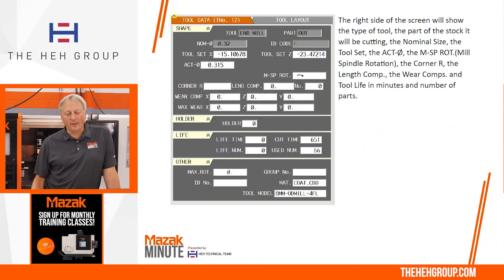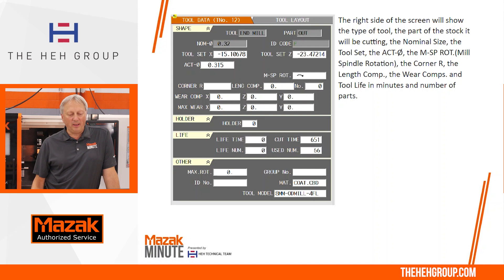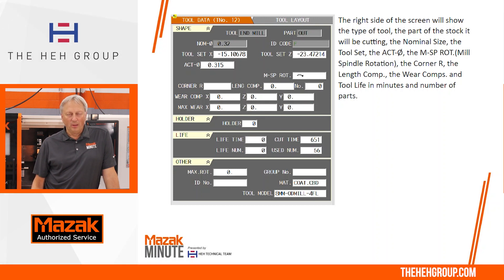On the right side of the screen you're going to see a description of the tool. At the very top you see tool data tool number 12. In that you're going to see the type of tool that we're describing, the operation or the out/inside, the nominal size, the tool set, the actual diameter, the rotation of the middle spindle, wear comps, and tool life monitoring.